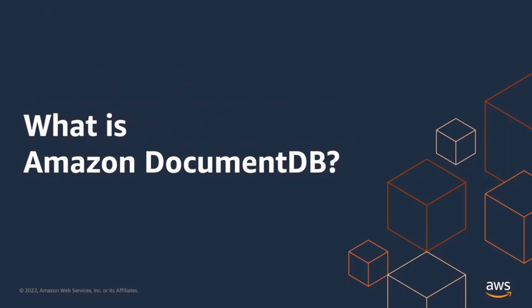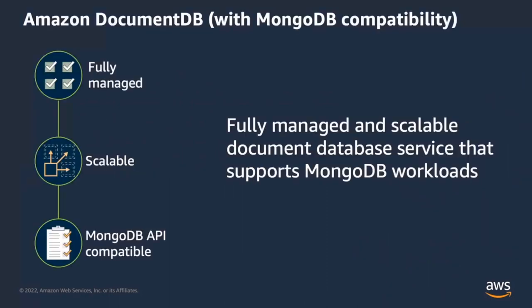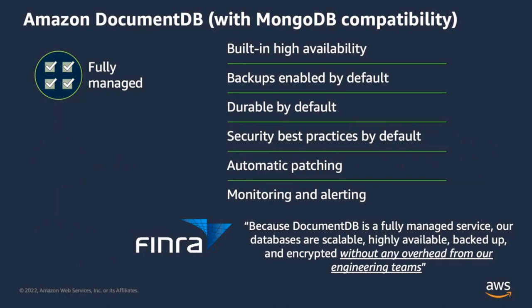Let's start with what is DocumentDB. Amazon DocumentDB is a fully managed, scalable, MongoDB-compatible database service that can scale millions of requests per second with millisecond-level latency. DocumentDB is fully managed by AWS — there is no hardware to provision. It is pretty simple to set up through the AWS Management Console, and you can spin up a cluster within minutes. You can also use CDKs, CLIs, CloudFormation, Terraform, or whatever you prefer.